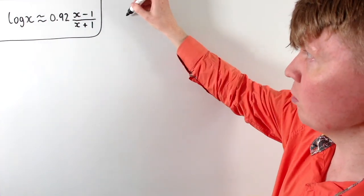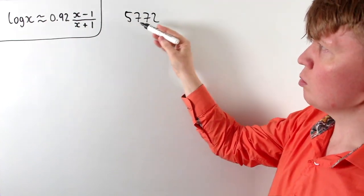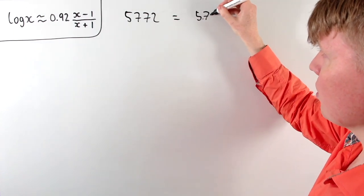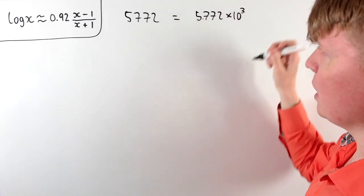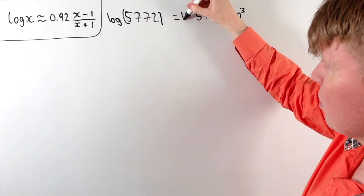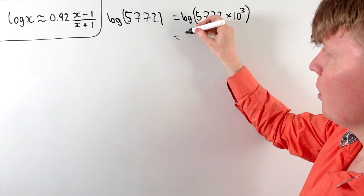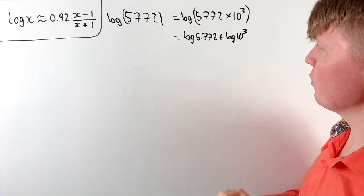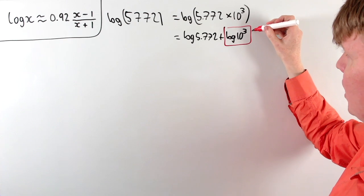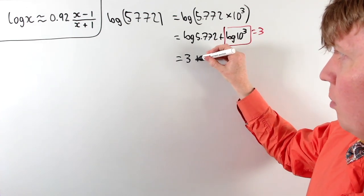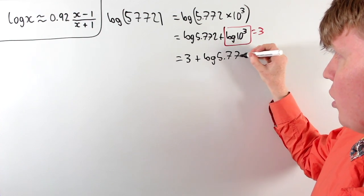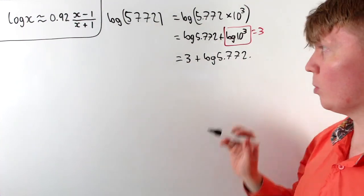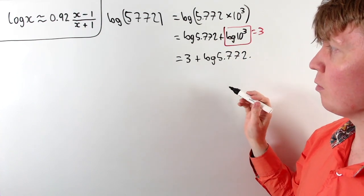So let's say we have a large number — say 5,772. We could write this in scientific notation as 5.772 times 10 to the power of 3. Then if we take the logarithm and apply the laws of logarithms, we get log 5.772 plus log base 10 of 10 to the power of 3, which equals 3. So we can write this as 3 plus log 5.772. Even though our approximation isn't very good for x = 5,772, it might be better for 5.772.